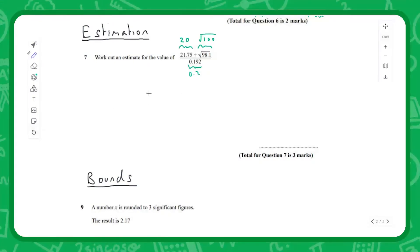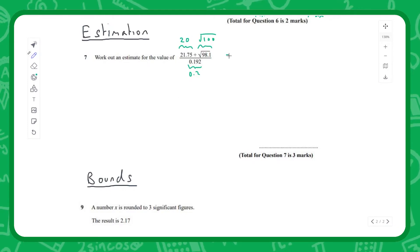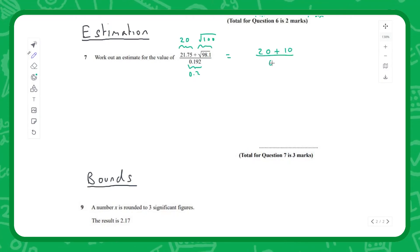So if we then do this calculation, well this is just 20 plus square root of 100 is going to be 10, all divided by 0.2. Well that gives us 30 over 0.2, which is the same as 30 times 5, which is going to give us 150. So that's going to be our answer.